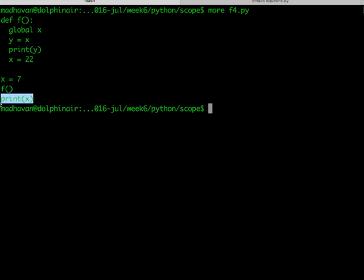This statement should first print 7—it should print a 7 from the print y—and then print 22 from this print x. So if we run this, indeed this is what we see. We have two lines. The first 7 comes from print y and the second 22 comes from print x outside.